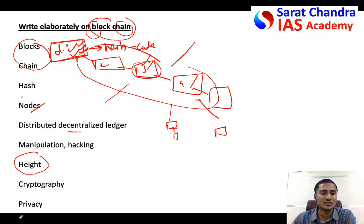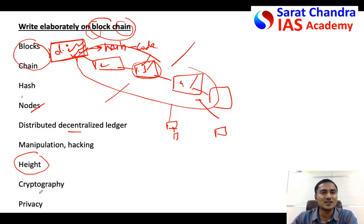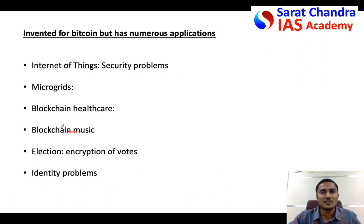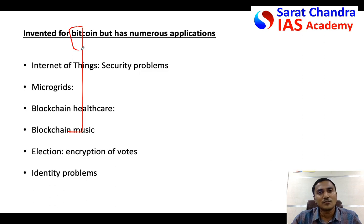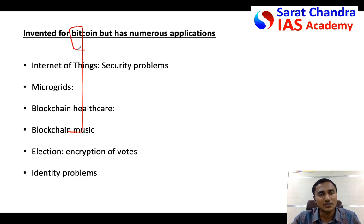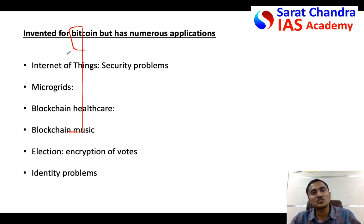Privacy is also taken care of because the names of transactors are saved in the form of a username — the actual name is not stored. Blockchain technology was originally invented for Bitcoin to maintain the cryptocurrency ledger. However, as it has several benefits, its applications extend to a wide range of sectors. Let us discuss some of those sectors, with a specific focus on banking and finance.